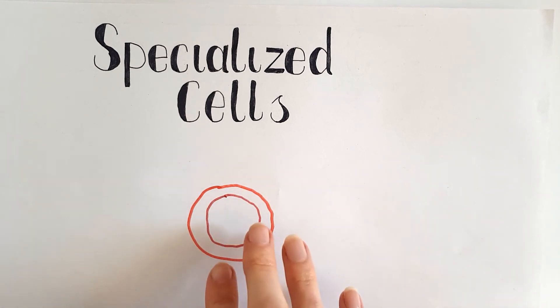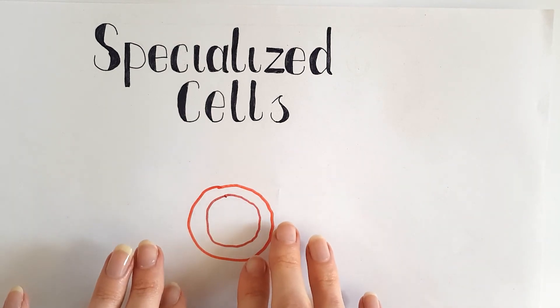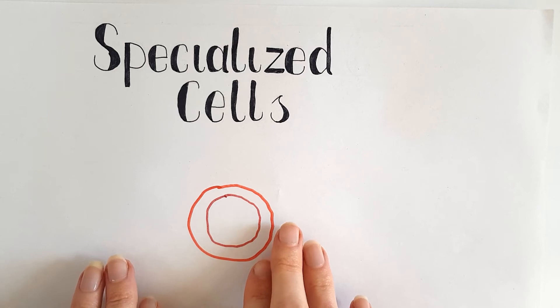So they have no other organelles inside them. They're completely spare, just so all of their surface area can be taken up just for transporting oxygen.